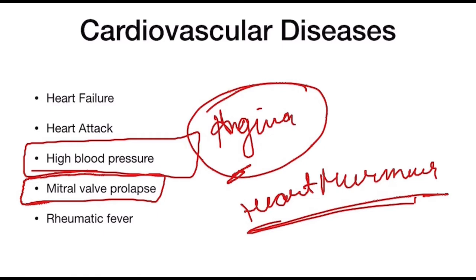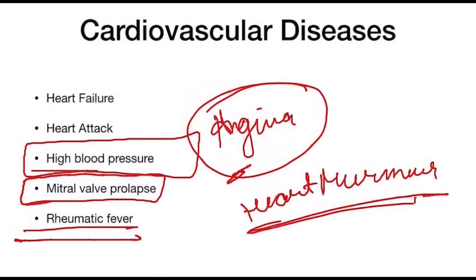Rheumatic fever is an autoimmune condition that can follow a pharyngeal streptococcal infection and can lead to damage of heart valves, causing rheumatic heart disease. Other cardiovascular conditions include congenital heart disease, artificial heart valves, and arrhythmia. Vasoconstrictors in local anesthesia should be given cautiously to patients prone to arrhythmia, as they may be precipitated by excessive quantities or inadvertent intravascular injections. Stress reduction protocol is necessary. Anti-arrhythmic drugs can cause adverse oral health changes, and patients with atrial fibrillation may be taking anticoagulants or antiplatelets. Some patients may require a pacemaker or defibrillator.